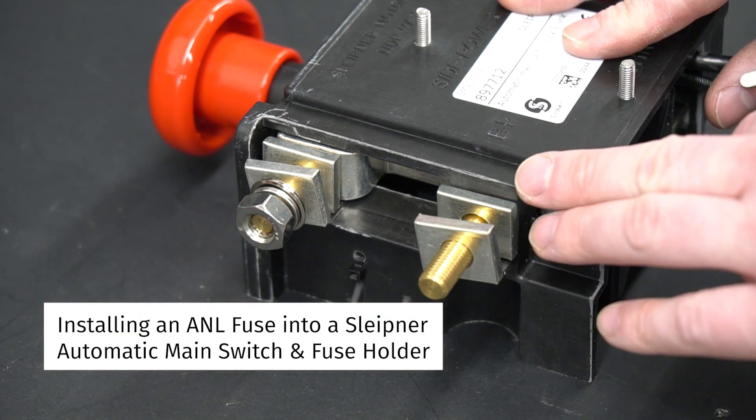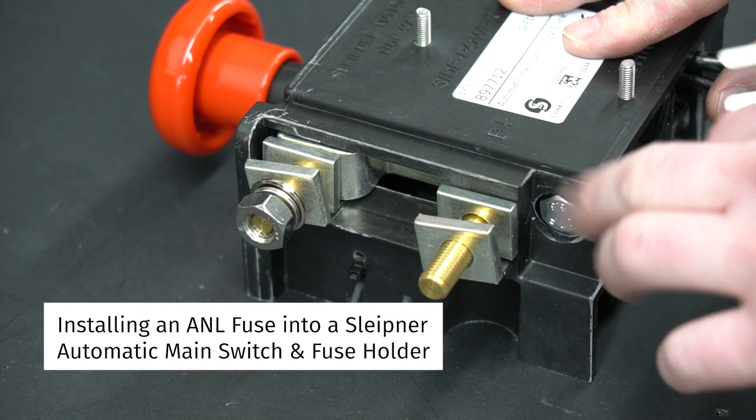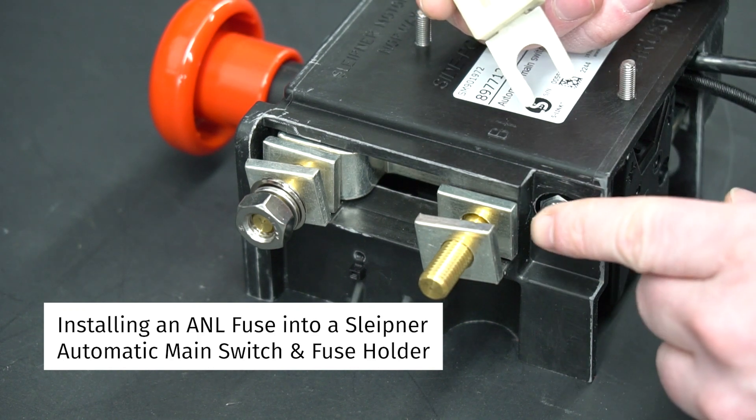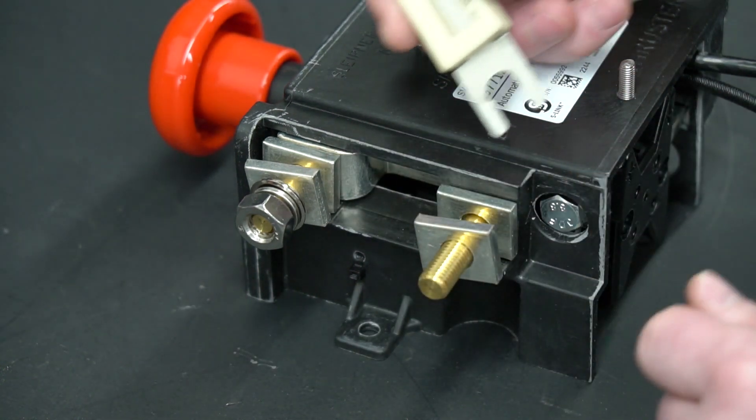The automatic main switch has the fuse holder located on the left side. The fuse gets installed between the two square washers on both terminals.